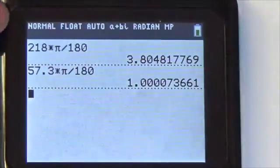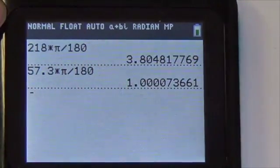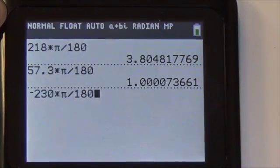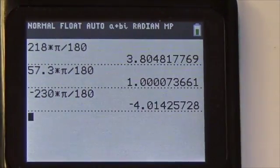Anyway, so we go back to this. Negative 230 times π divided by 180. And negative 4.0.